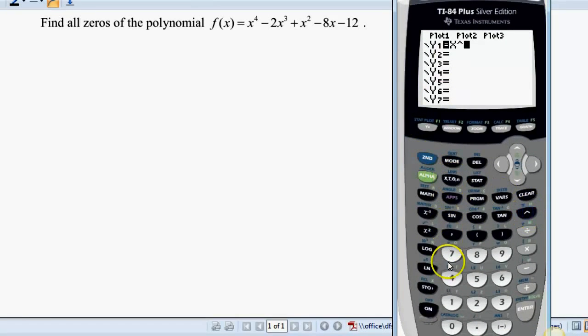So I've got x to the fourth, minus 2x to the third, plus x to the second, minus 8x, minus 12. Now this is a fourth degree polynomial, so we are expecting four zeros. Let's take a look at the graph.